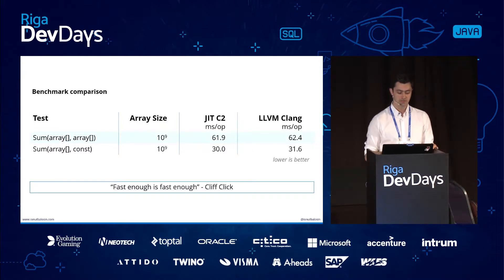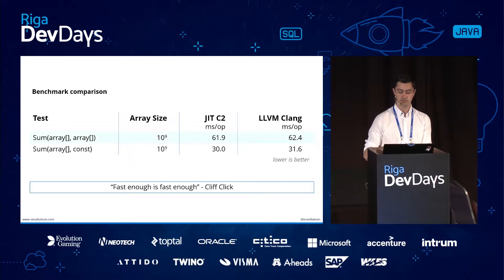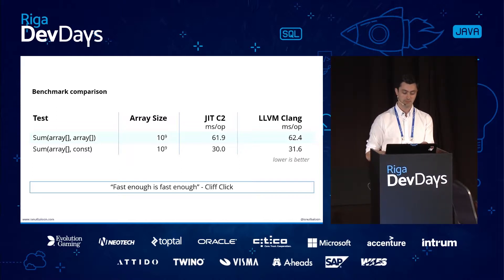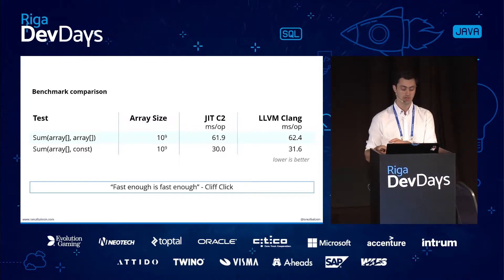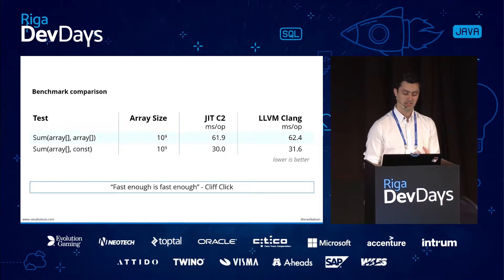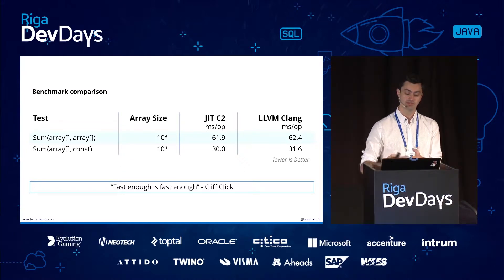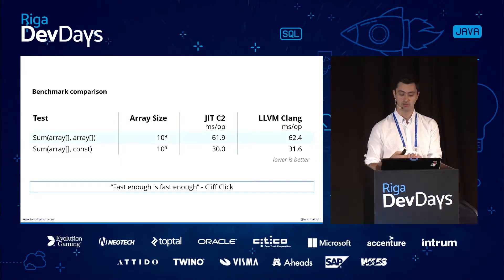The JIT C2 pattern for these vectorization cases: it starts with a scalar pre-loop to pre-fill CPU caches for memory alignment, continues with a vectorized main loop covering 128 additions per cycle, then a vectorized post-loop covering 8 per cycle, and finally a scalar post-loop one by one. For different array sizes, both JIT C2 and LLVM Clang perform almost the same — around 61 vs 62 ms and 30 vs 31 ms. The conclusion is: when both compilers rely on the same optimization patterns like vectorization and loop unrolling, performance is almost identical.